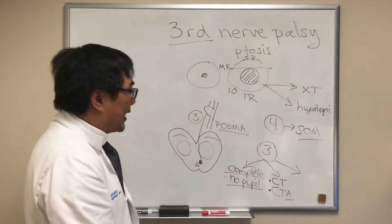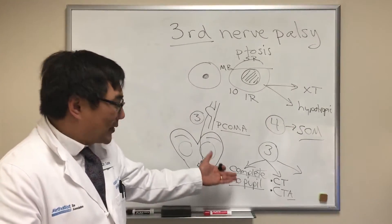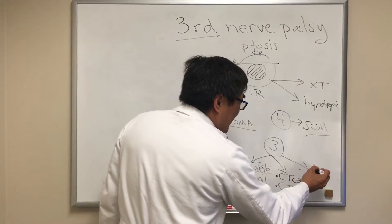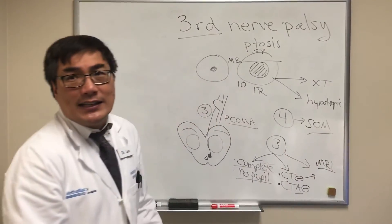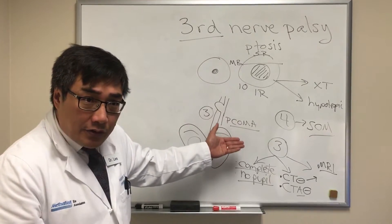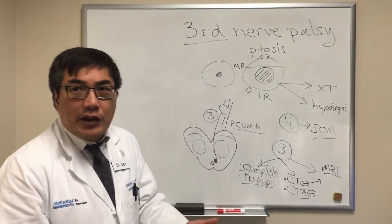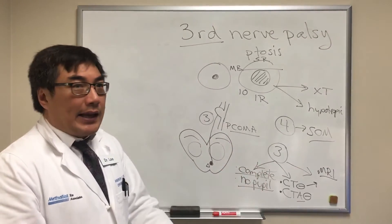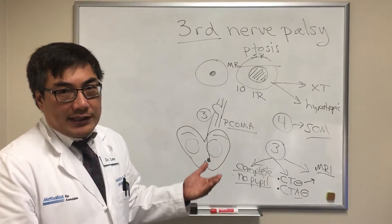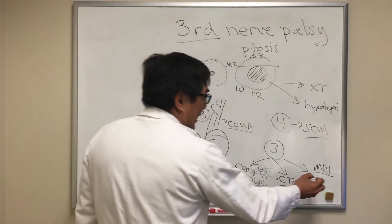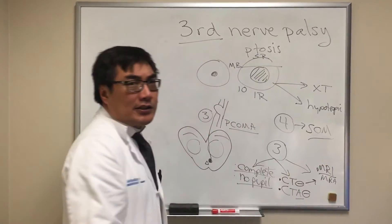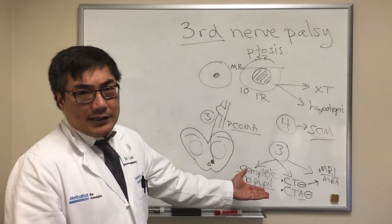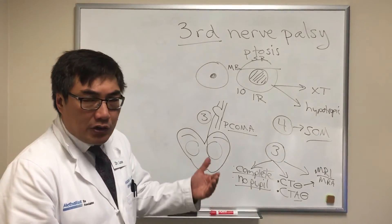All third nerve palsies need a CT and CTA if urgent, emergent, or there's concern for subarachnoid hemorrhage or aneurysm. If CT and CTA are both negative, you still need an MRI. CT and CTA are good for aneurysmal causes, but MRI is better for soft tissue and other causes — stroke, tumors, demyelinating disease — things CT simply isn't good enough for. An MRA is often added to the MRI because CTA can miss thrombosed aneurysms or be limited by bone hardening artifact at the skull base.